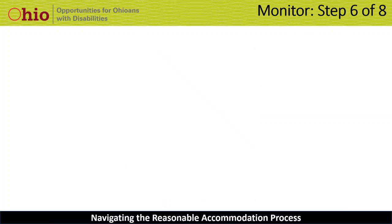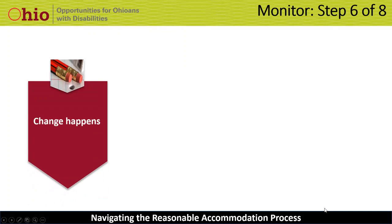Now we have taken all the steps to implement the accommodation successfully, but we aren't finished — because change happens. The accommodation might be working great at the start, but it's almost guaranteed that something will change and could impact its effectiveness. So we want to build a monitoring step — Step 6 — into our reasonable accommodation process. Accommodations can stop being effective when there is a change in an employee's disability. For example, an employee who is hard of hearing using an assistive listening device may progress to a total loss of hearing, resulting in needing a different accommodation, possibly one that provides speech-to-text output like live captioning for meetings and trainings.